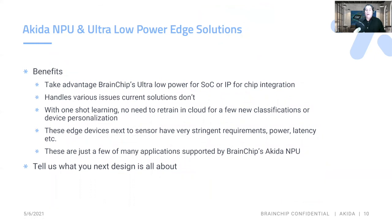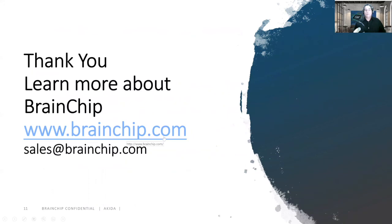So Akida's NPU with ultra low power — the benefits. We take advantage of BrainChip's ultra low power for SoC or IP for chip integration. We handle various issues current solutions don't. With one-shot learning, no need to retrain in the cloud for a few classifications or for device personalizations. These edge devices sit next to the sensor and they have very stringent requirements. These are just a few of many applications supported by BrainChip's Akida NPU. Tell us what your next design is all about. Learn more about BrainChip at www.brainchip.com, or you can email us at sales@brainchip.com, or stay after this session for a Q&A. Thank you.